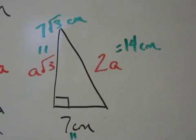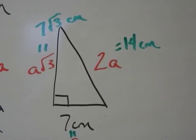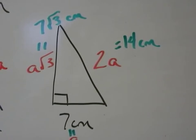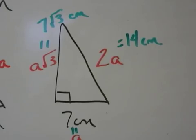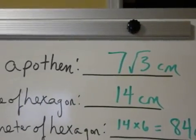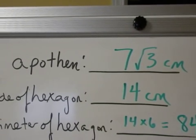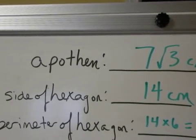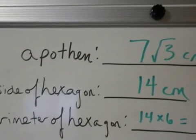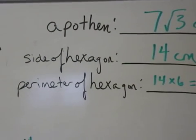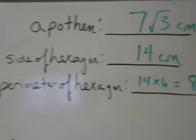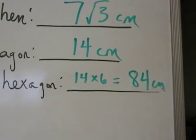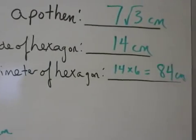Well, we also know that the length of a side of the hexagon is the same size as the hypotenuse or the radius. It's 2A. That means that the apothem is 7 radical 3 centimeters. We know that the side of a hexagon is 14 centimeters, and the perimeter of a hexagon. Well, if each side is 14 and there's six sides, 14 times 6 gives me 84 centimeters for the perimeter of my hexagon.